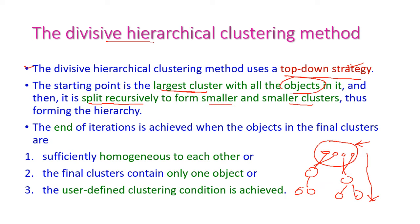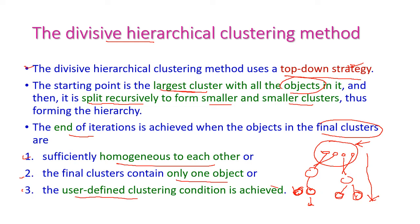Initially all data points are in a single cluster. At the end, smaller clusters meet the specified condition. The algorithm terminates when the objects in the final clusters are sufficiently homogeneous — all data items inside the cluster are similar to each other — or the final cluster contains only one object, meaning we cannot divide further, or the user-defined cluster condition is achieved.